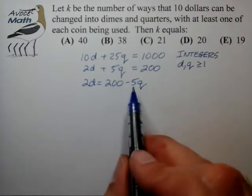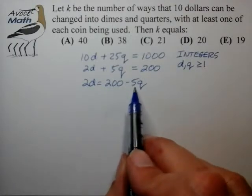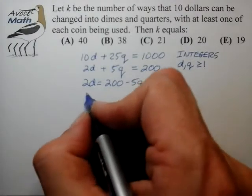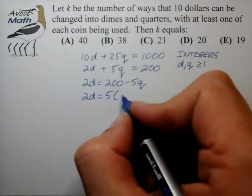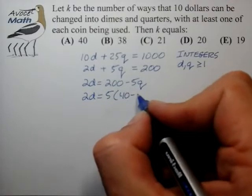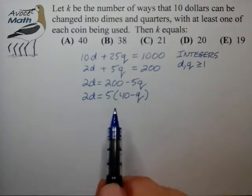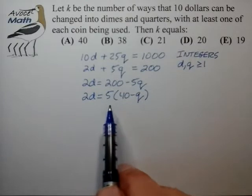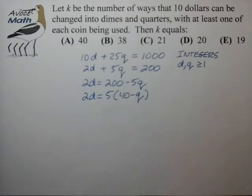Now the next step is to recognize the common factor between the 200 and the 5 and pull that out of the expression. And now we have to try to reconcile and match up the factors on the right side and the left side of this equation.